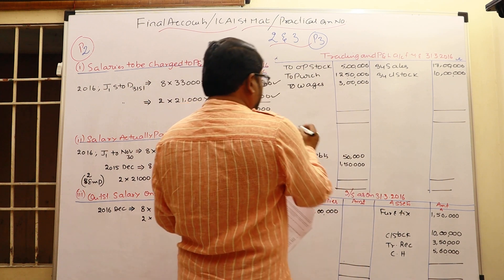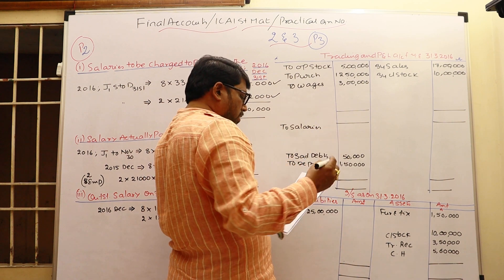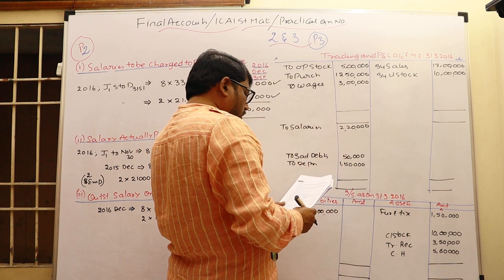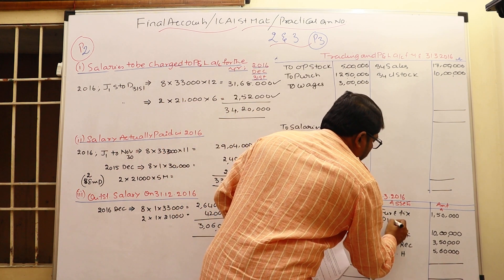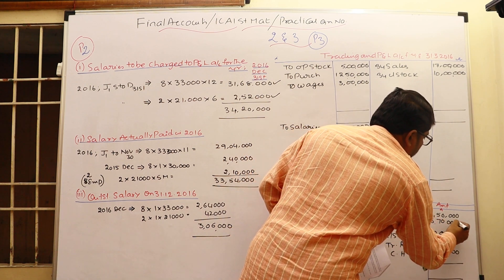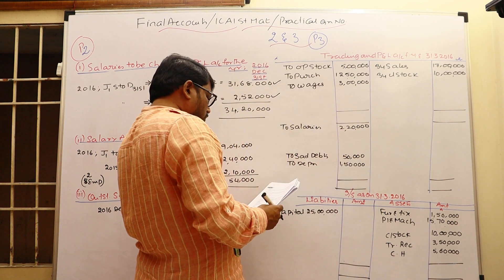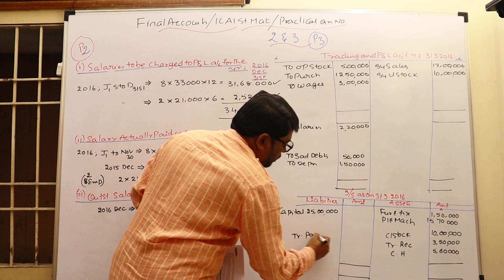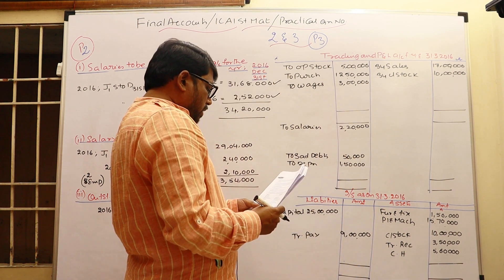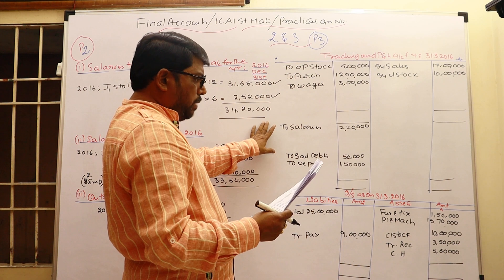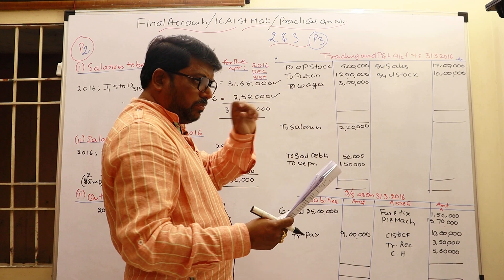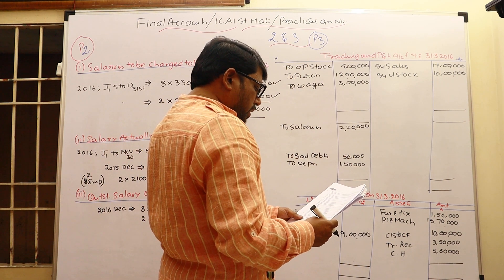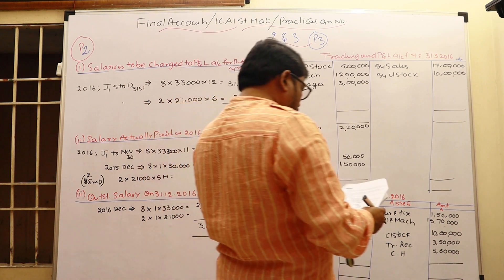Salaries debited to P&L: ₹2,20,000. Plant and machinery: ₹15,70,000. Total depreciation on fixed assets: ₹1,50,000 charged to P&L account. On the credit side, trade payable as a current liability: ₹9 lakhs. Note: bad debts and depreciation are both charged to P&L only — they need not be deducted from assets separately as they have already been accounted for. Sales already taken.